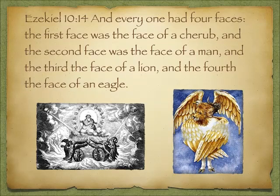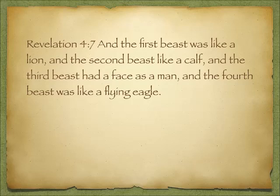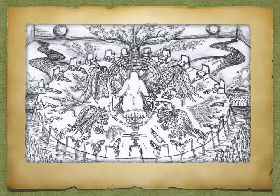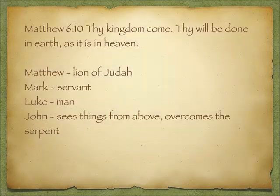Also in Revelation we see the same thing: 'The first beast was like a lion, the second beast like a calf, the third beast had the face of a man, and the fourth beast was like a flying eagle.' And in Matthew 6:10 — 'Thy kingdom come, thy will be done in earth as it is in heaven' — on earth the Father provided four witnesses: the four gospel writers, who represent exactly these same four figures.